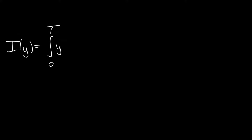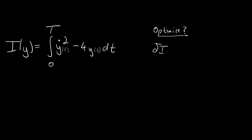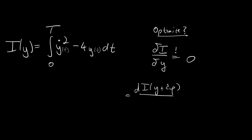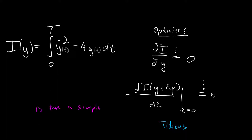You are given a functional — for instance one associated with an object falling down. You want to optimize this functional, so you take the functional derivative and set it to zero. You know how to evaluate it by the Gateaux variation, but this is tedious. Is there a simpler way? And indeed there is.